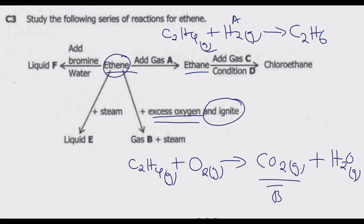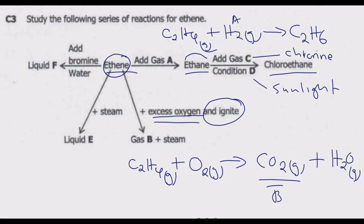Next, ethene reacts with gas C under condition D to give chloroethane. Since we are getting chloroethane, gas C must be chlorine — chlorine is replacing a hydrogen bond in ethane to form chloroethane. Condition D is sunlight, which provides the energy needed to break the chlorine bond so it can replace the hydrogen in ethane.